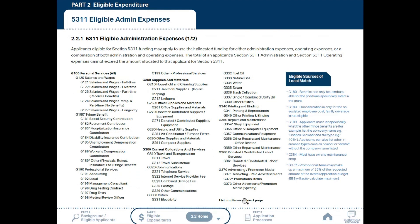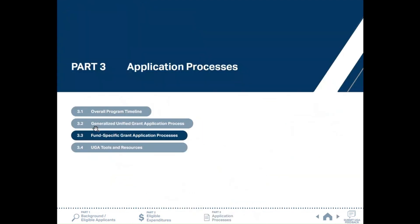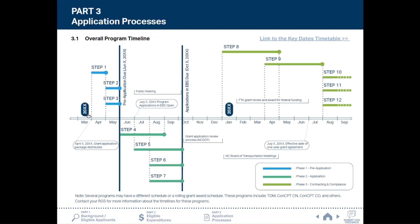Part 3.2 provides an overview of the grant application process along with linked step-by-step guidance for applying to each funding program. Part 3.1 shows the overall program timeline for each of the 12 application steps. Phase 1 is typically due early June, and phase 2, the application, is usually due early October.